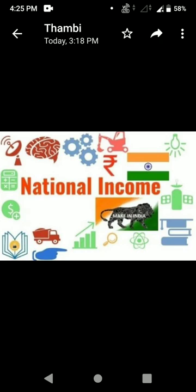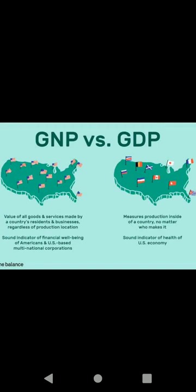Under national income, there are various terms for measuring national income. Today we are going to study seven terms of national income. They are: gross national product, gross domestic product, net national product, net domestic product, per capita income, personal income, and disposable income.